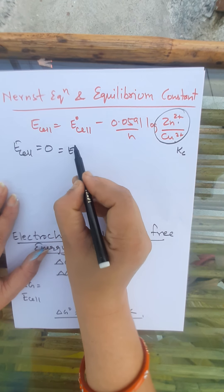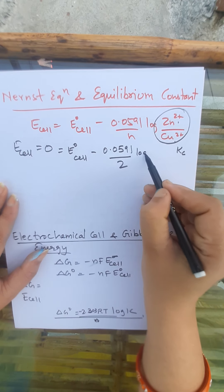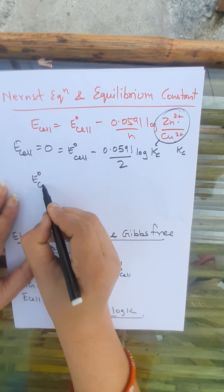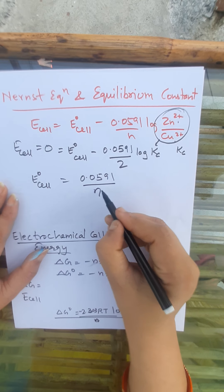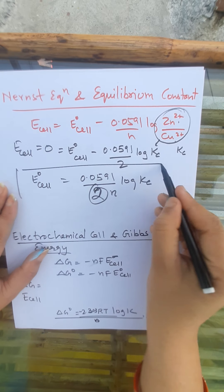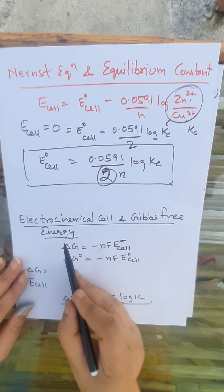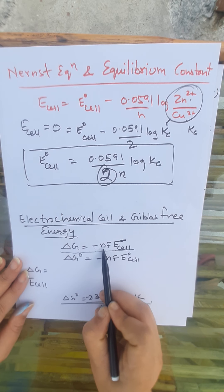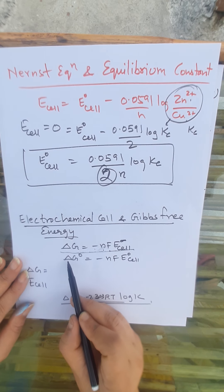Now we look at the Nernst equation and the equilibrium constant. At equilibrium, E(cell) = 0, and the ratio of ion concentrations gives the equilibrium constant Kc. The equation becomes: E°(cell) = (0.0591/N) times log Kc. This is the relation between the Nernst equation and the equilibrium constant.